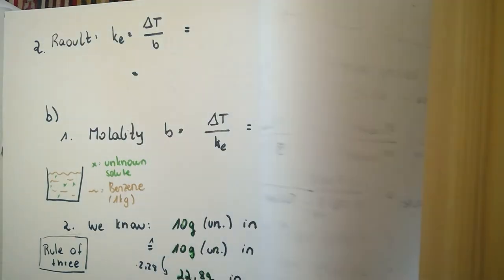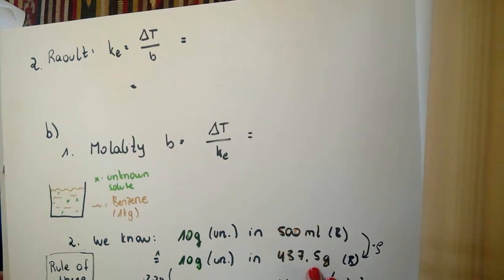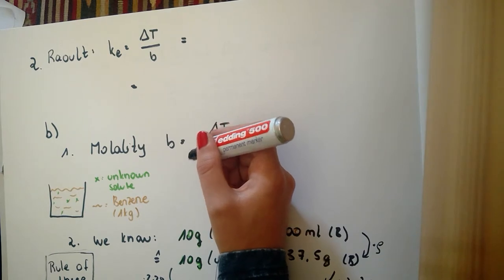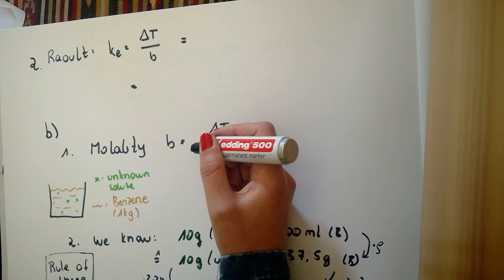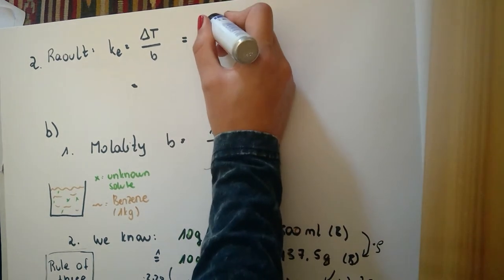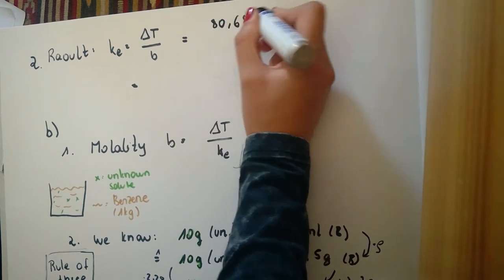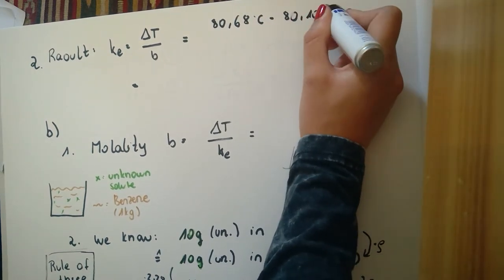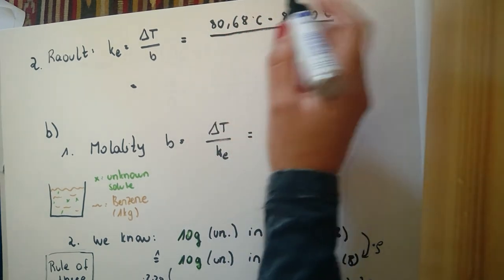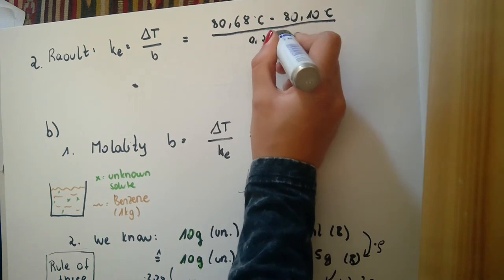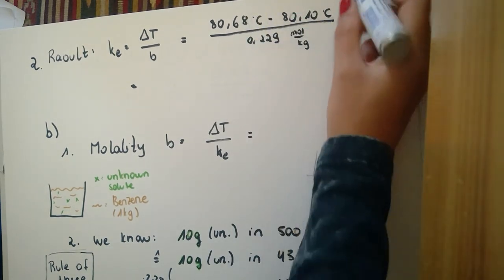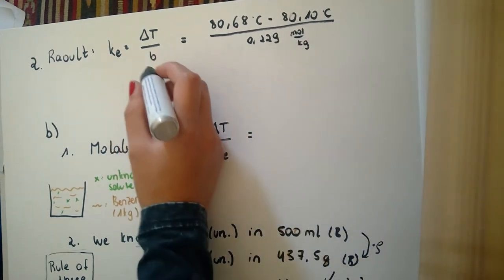Now we can insert this in the formula of Raoult to calculate the ebullioscopic constant. The difference of the temperatures is the new boiling temperature, 80.68 degrees C, minus the normal boiling temperature of benzene, 80.1 degrees C, divided by 0.229 mol per kilogram. Because this is a temperature difference, it's equal in Kelvin. Our result is 2.53 kg Kelvin per mol.